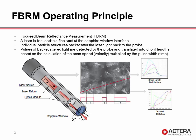The Focus Beam Reflectance Measurement Probe, or FBRM for short, is the probe we are using to perform the characterizations in this webinar. This slide provides a schematic of the operating principle, whereby a laser is presented to a rotating optics module that focuses the laser to a fine spot at the sapphire window. When the particles pass by the window, the laser backscatter is detected as timed pulses at each particle intersection. The timed pulses are then multiplied by the scan speed to generate the collection of cord lengths for the particle system.